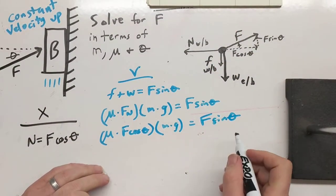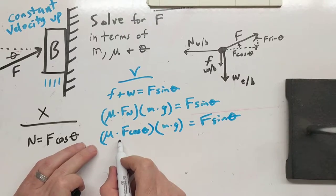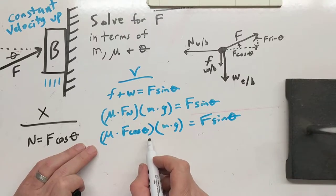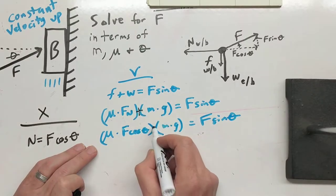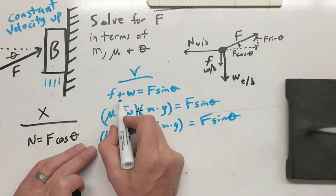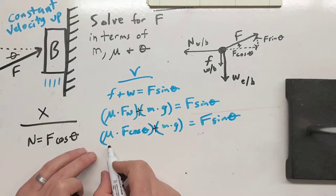Now we can just rearrange this. I've got a F cosine theta. That's a plus sign in there. Left that out. Plus. Okay, because we're adding those two together. So now, we need to get our F's all on one side.